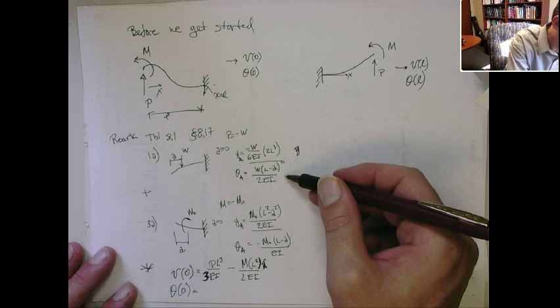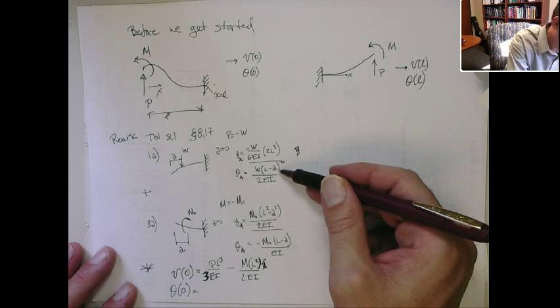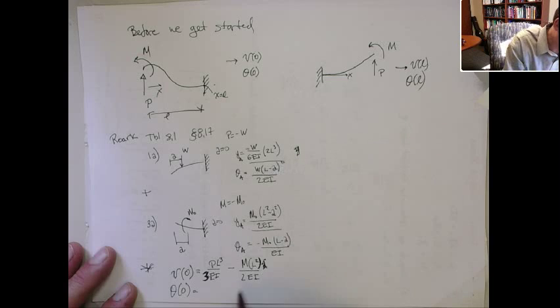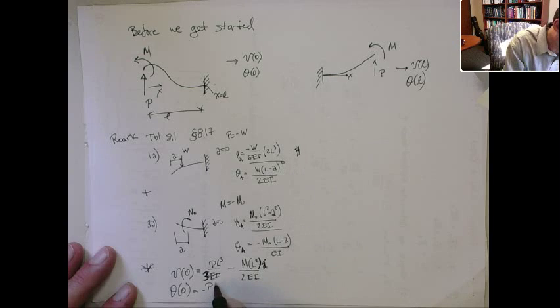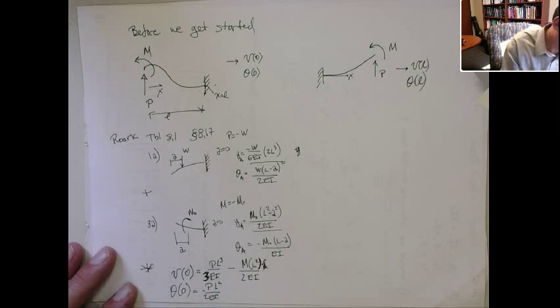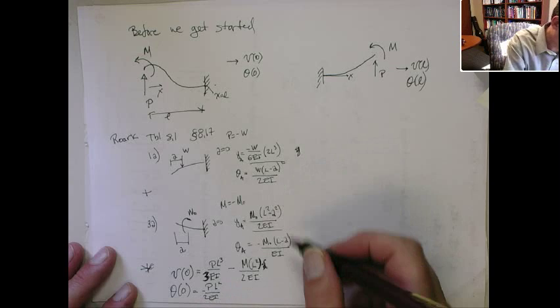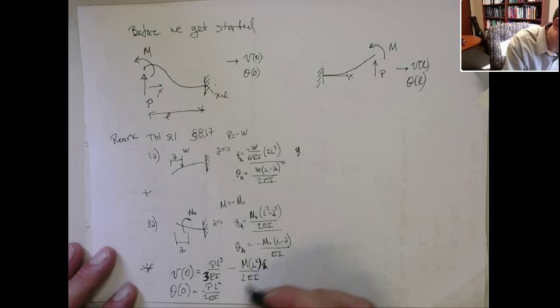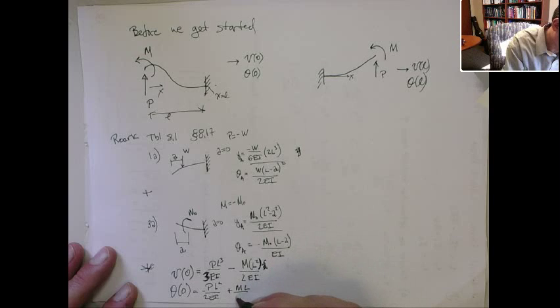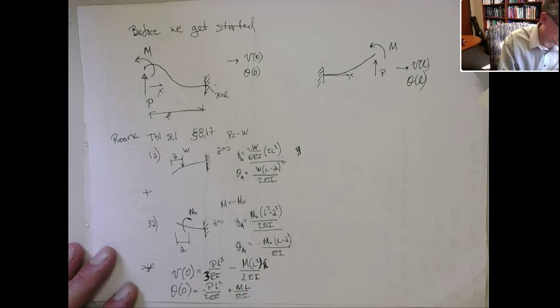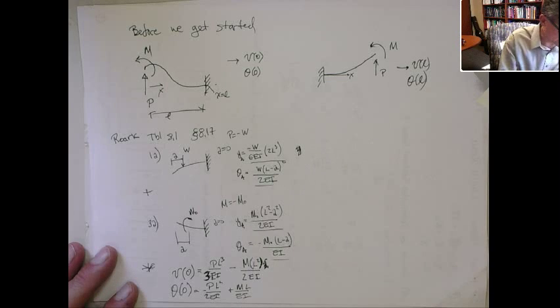And then let's do the same to get the rotation. So if we look at the rotation term, again, we'll let A go to 0. This W changes sign, so I get a minus P times L squared over 2 EI. And then I add to it this case, and we get the sign change on that, so we get plus M times L over EI. So I've added the two rotations, but I've done the sign change because my moments and my forces have flipped the sign.